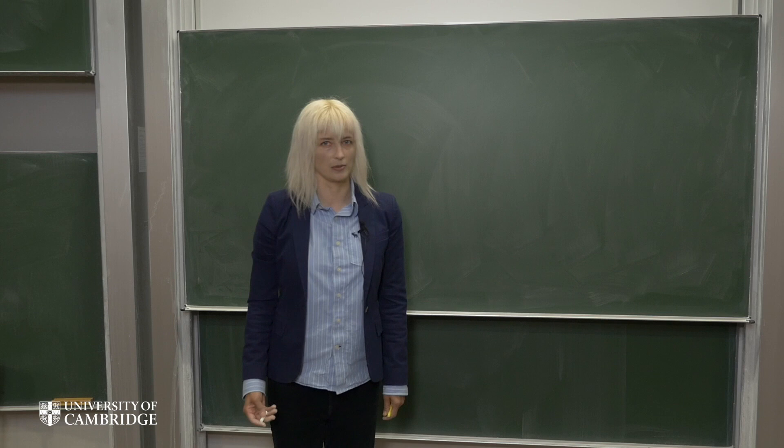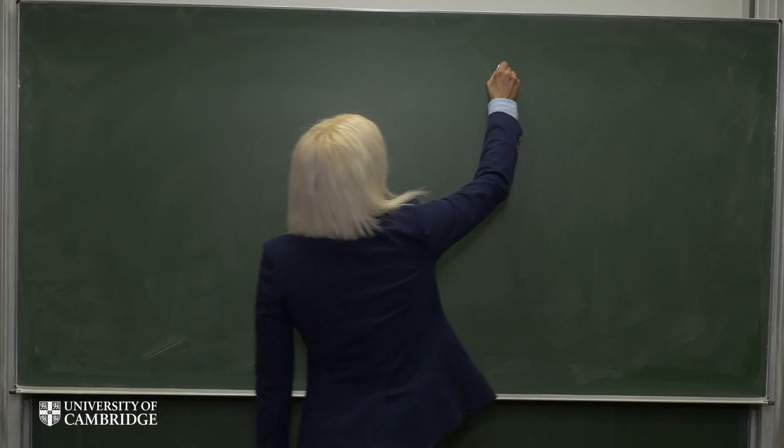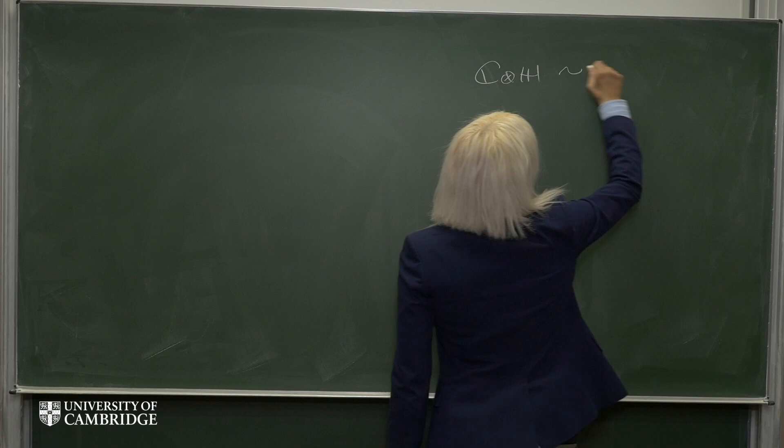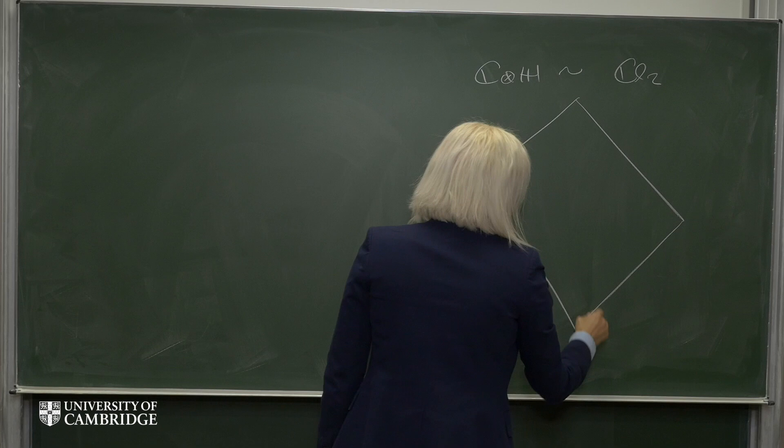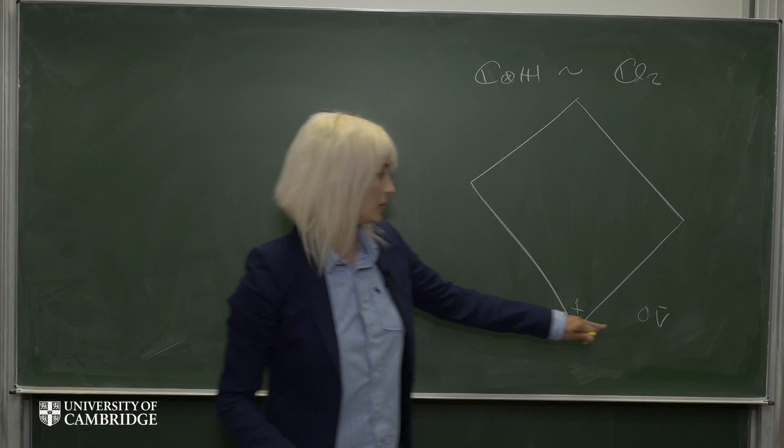It turns out that the complex quaternions give a faithful representation of the Clifford Algebra CL2. Here at the bottom, we have the identity, which is just the zero vector.